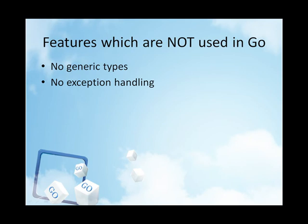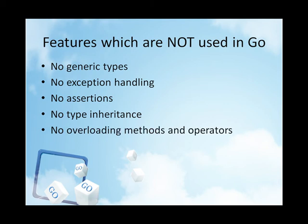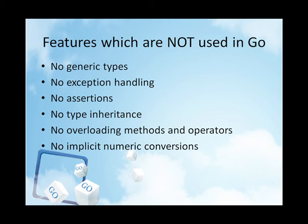Go doesn't provide exceptions. They are undeniably convenient, but programmers use them as a crutch to avoid thinking about proper error handling and reporting. Proper error handling means that servers continue operations after non-fatal errors instead of crashing. Proper error reporting means that errors are direct and to the point, saving the programmer from interpreting a large crash trace. Precise errors are particularly important when the programmer seeing the error is not familiar with the code.